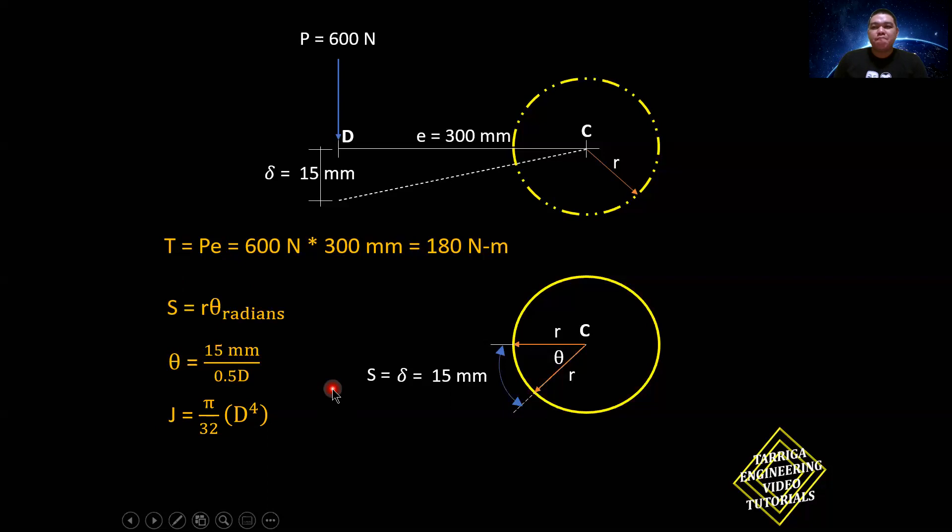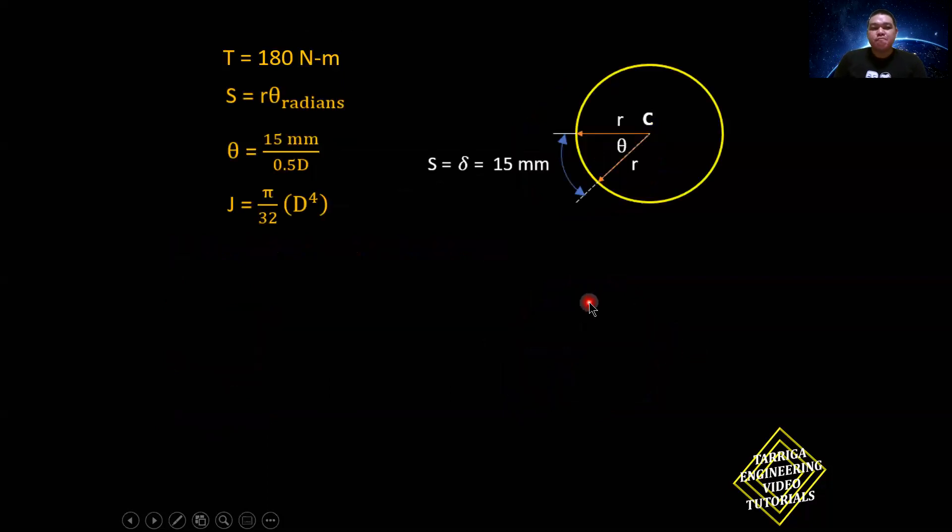So now, we will design the diameter of the shaft BC based on the given design specifications. Let's start with the basis of angle of twist. Remember, there's this formula: angle of twist is equal to TL over JG. No problem, torsion is given. L is the shaft BC length, which is 500 mm. As you can see in the previous slide, check where this is from, BC. It's in the drawing.